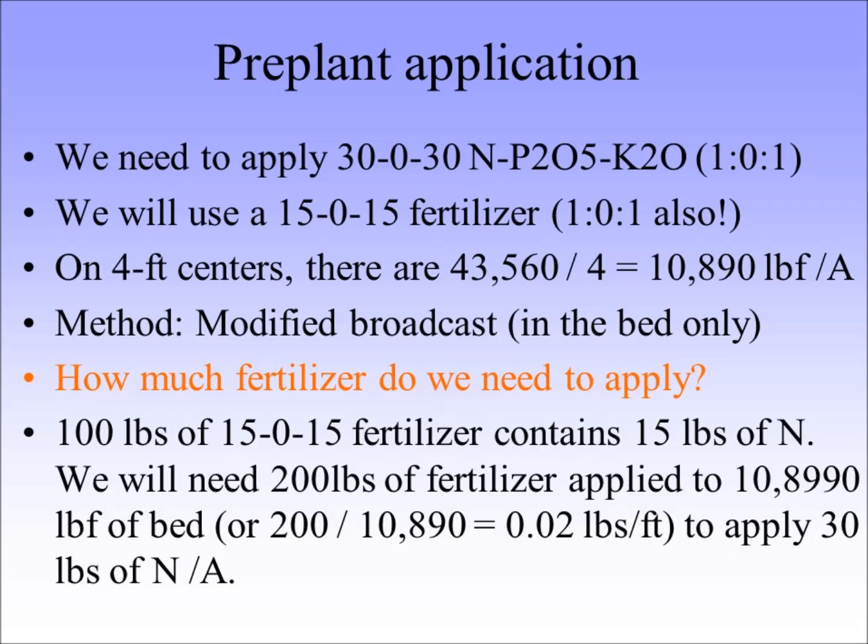For the pre-plant application, we need to put 30 of N, P2O5, and K2O. Notice the ratio between the N and K — we're going to use a 15-15 fertilizer, which is also a 1-to-1 ratio, to make it easier. You divide 43,560 by 4, giving you 10,890 linear bed feet per acre.